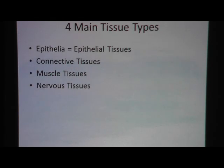Reviewed, we have four main tissue types in the body. We have epithelial tissue, connective tissue, muscle tissue, and nervous tissue. The entire body can be broken down into these four tissue types.